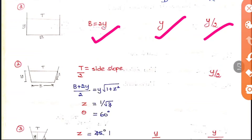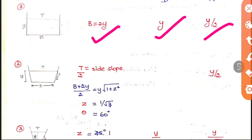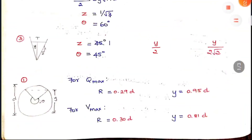For the trapezoidal section, the top width T should equal 2 times the inclined side slope. The slope m, also denoted z, equals 1 by root 3, and the angle theta equals 60 degrees. The r value is y/2 for the trapezoidal section as well. These values are important and will be explained with an example.